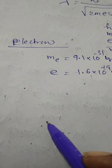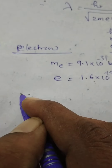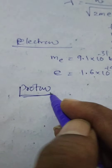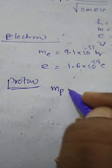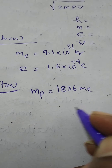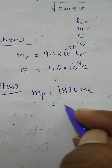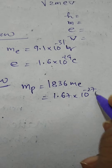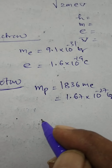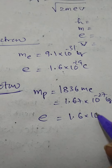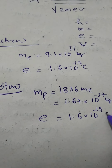Charge on the electron is equal to 1.6 into 10 power minus 19 coulombs. For a proton, mass of the proton is equal to nearly 1836 times the mass of electron and it is nearly 1.67 into 10 power minus 27 kilograms. Charge on the proton is equal to 1.6 into 10 power minus 19 coulombs.